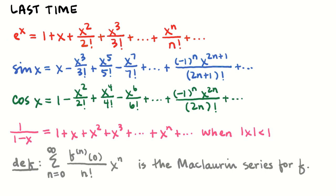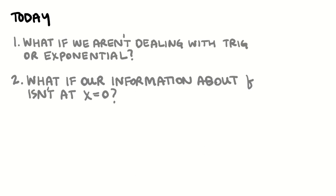I defined the Maclaurin series for you. So if we have any function f and we know all of its derivatives at x equals 0, we can write a series representation for f — we can write it as a power series, a high-degree polynomial. But today, we're going to be dealing with the question of what if we're looking at a function and we have all of its information at a point, like all of its derivatives at x equals 5, but we don't have any information at x equals 0. We'll learn how to deal with that today.